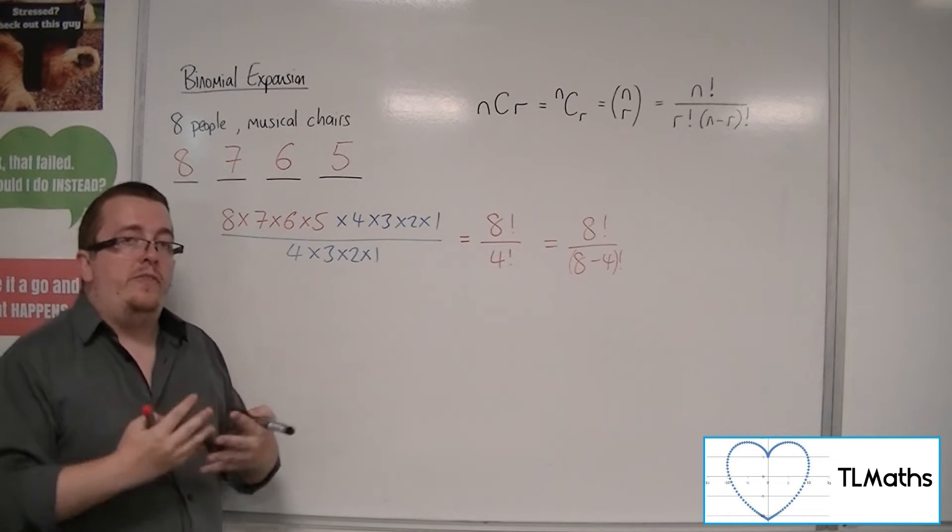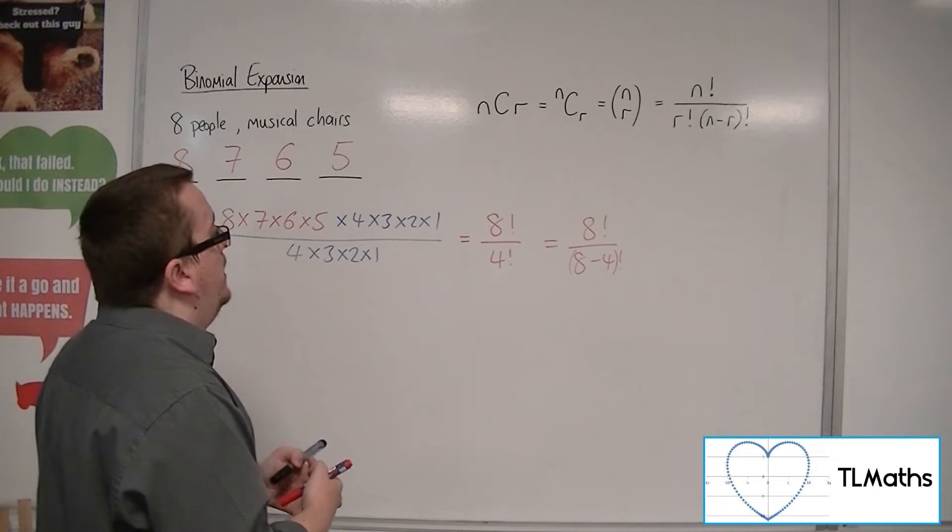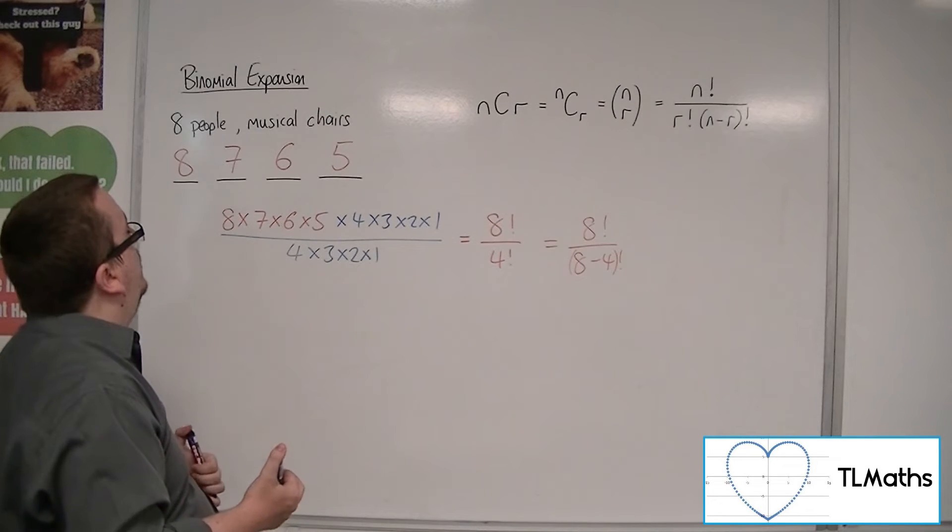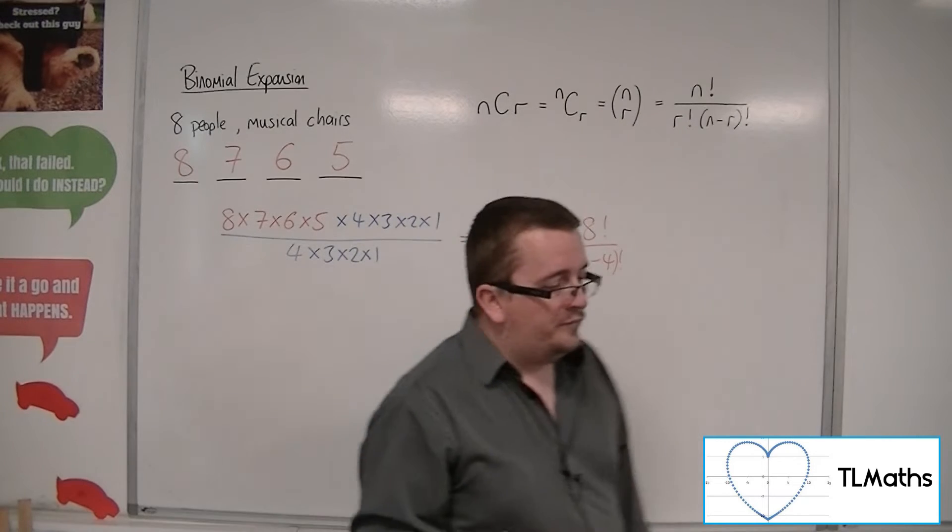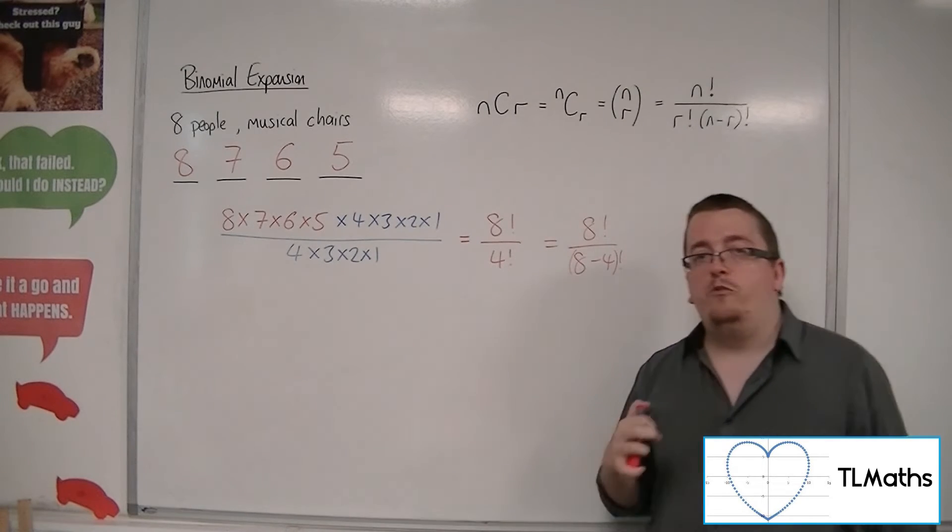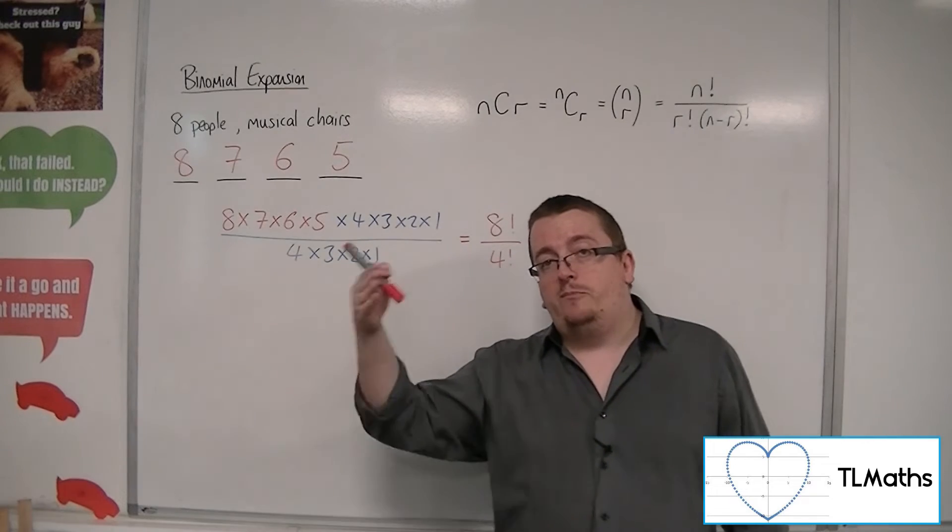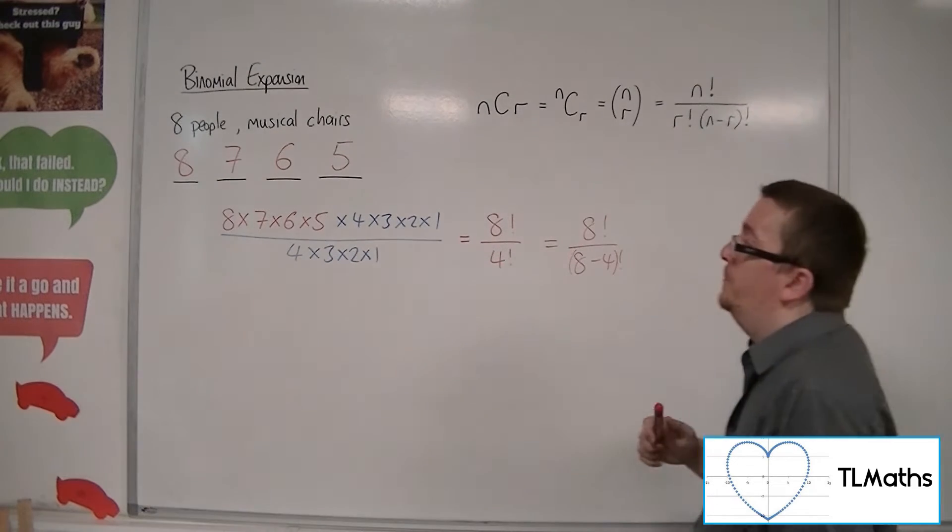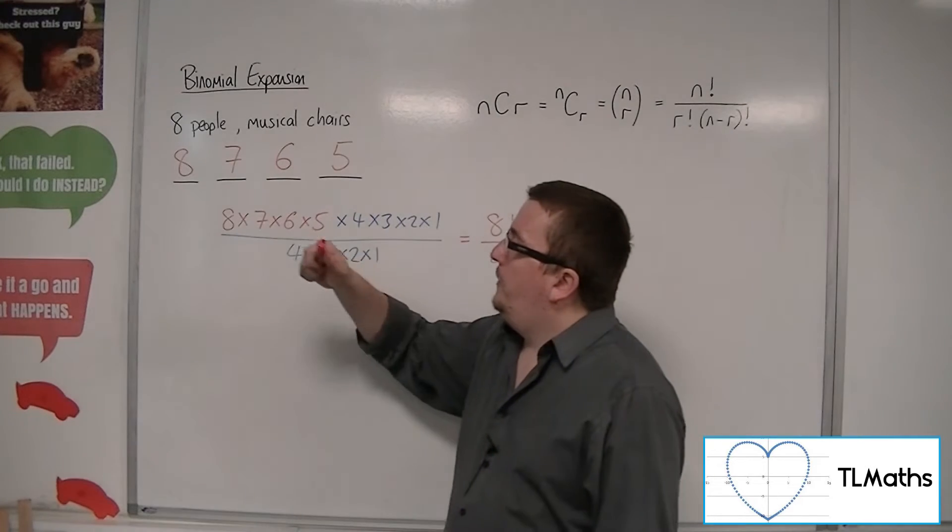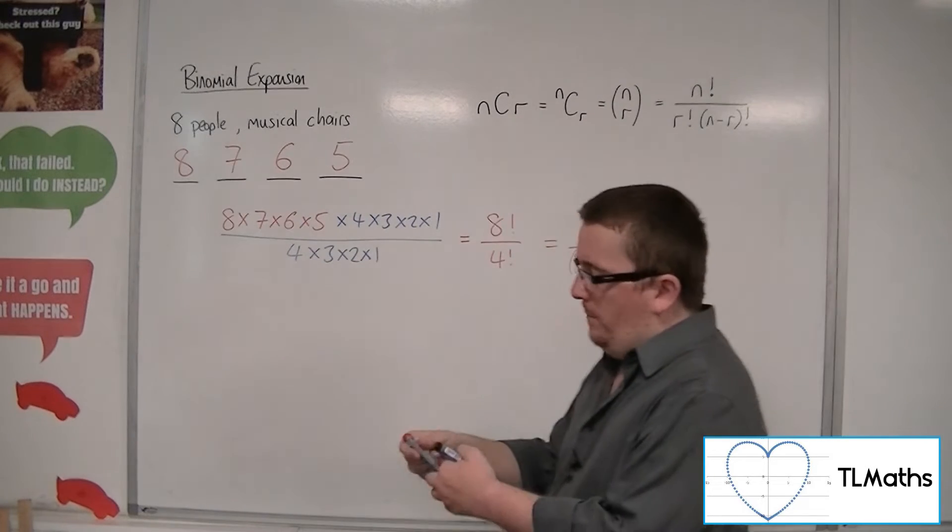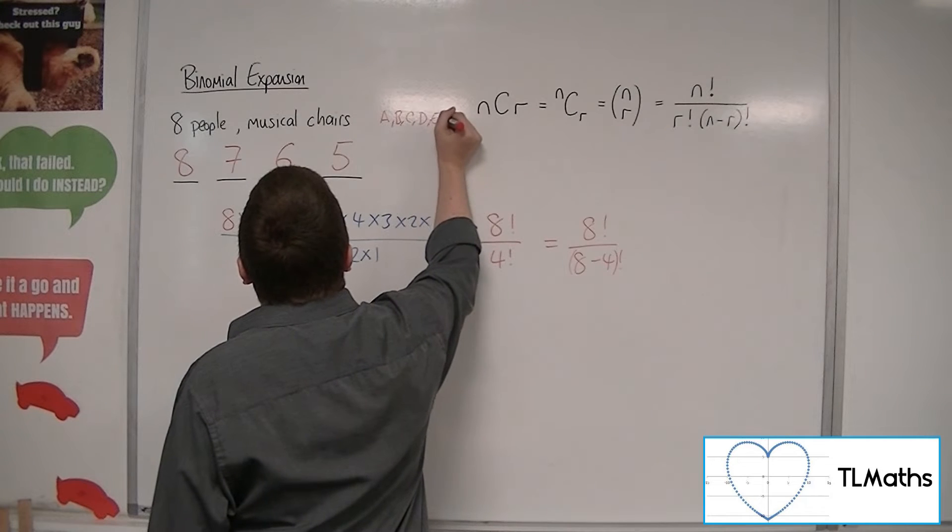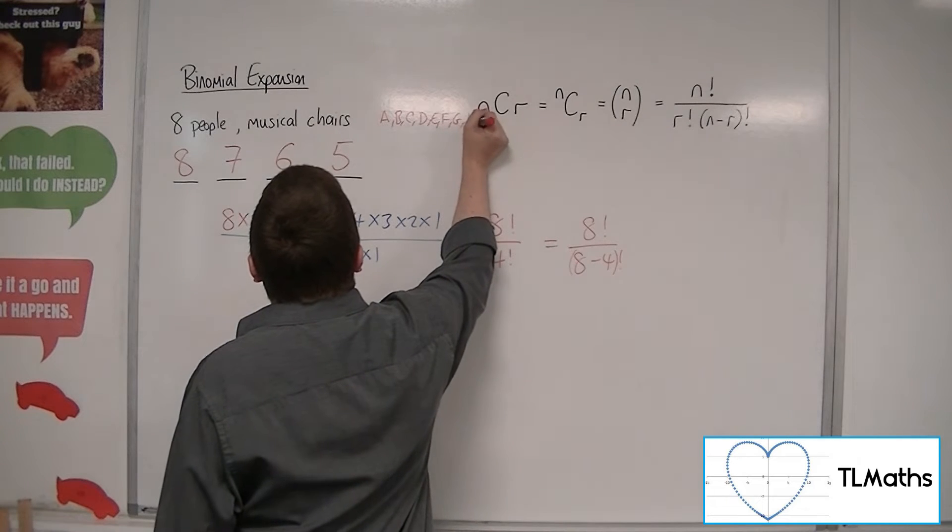Now, the way that we've done this is that, well, actually, if I've got these eight people and I've got these four chairs laid out, then this is telling me how many different ways we could have people sat in these chairs. So what we would be saying is that if we had these eight people and we called them A, B, C, D, E, F, G, and H,